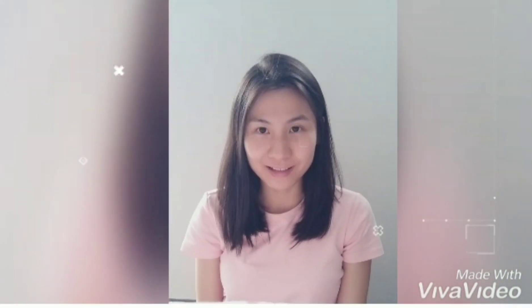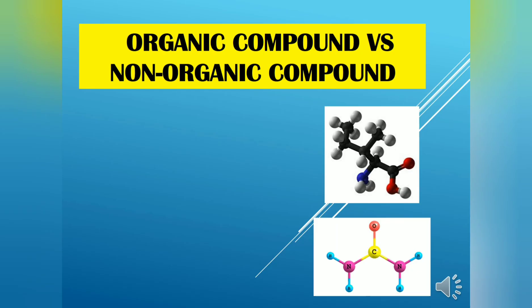Hello, I'm Madam YY, welcome to my channel. Today I'm going to explain to you what is the difference between organic compound and inorganic compound. Basically, organic compound contains carbon as a main element. Carbon has four valence electrons, so carbon can form four single covalent bonds.